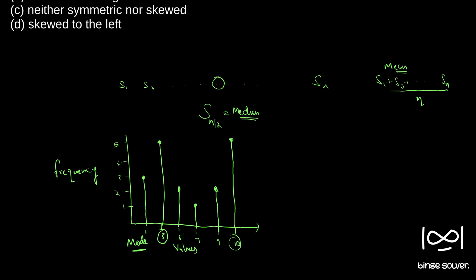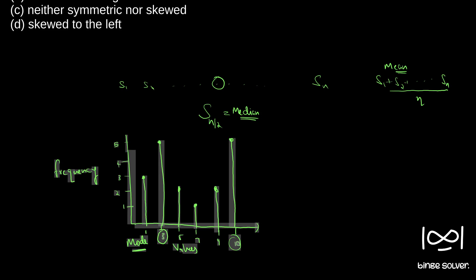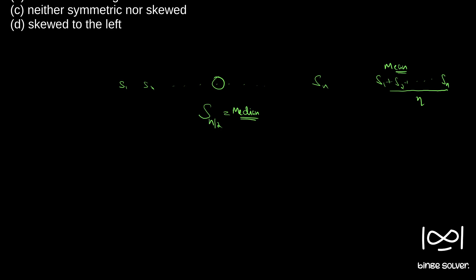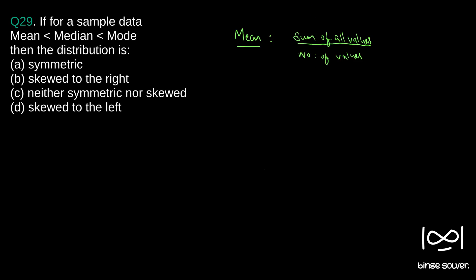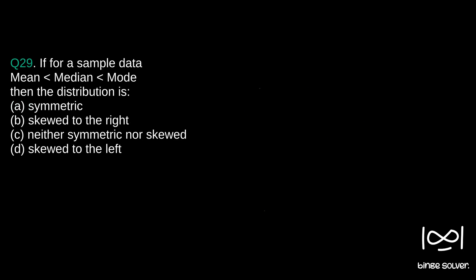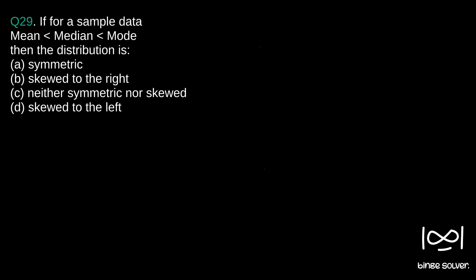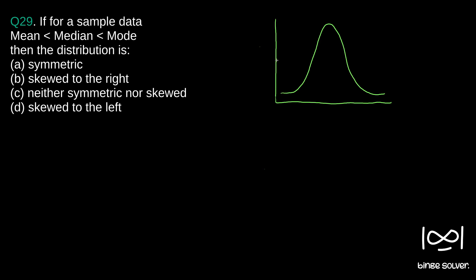Now we will see the question. The question is that mean is less than median is less than mode. In such a case, we draw a frequency-value curve. There are three possible shapes. One appears like a bell curve — a proper symmetric distribution, something like this.